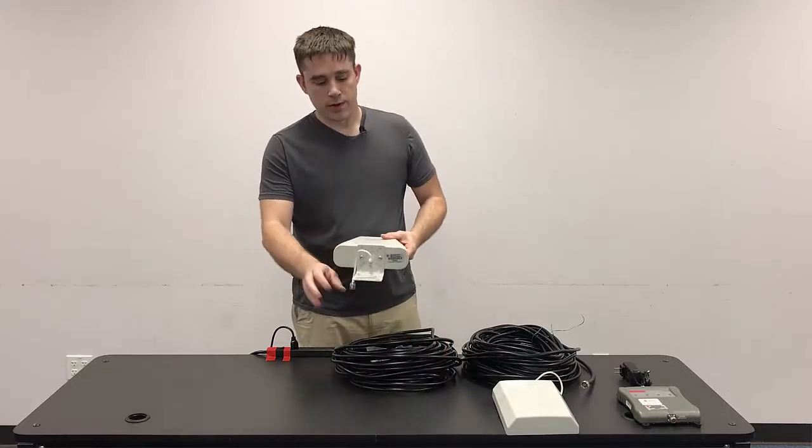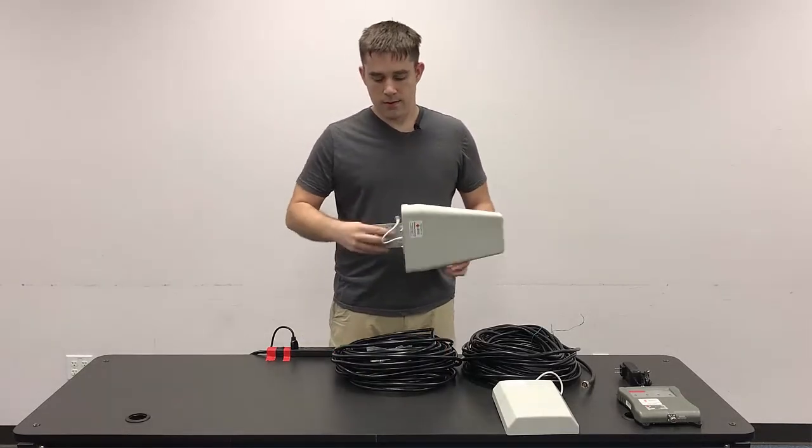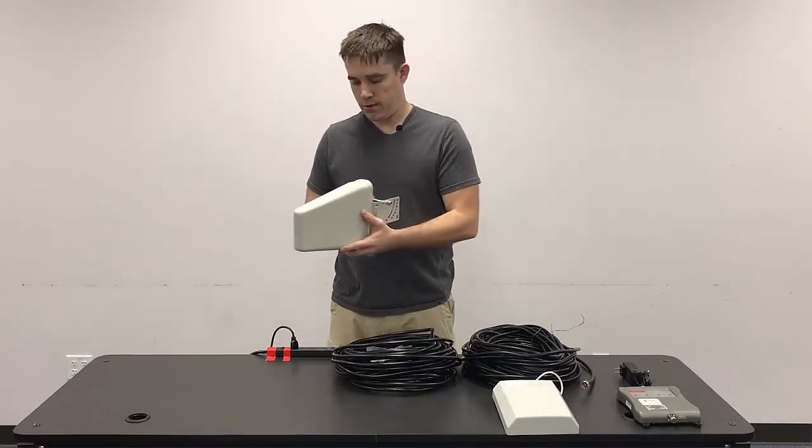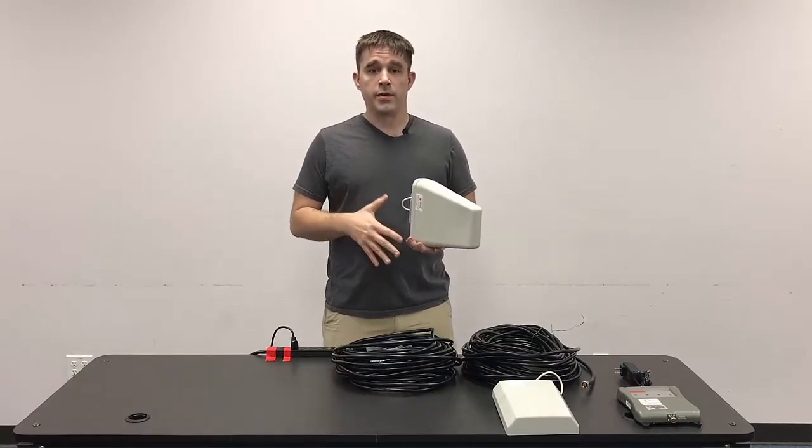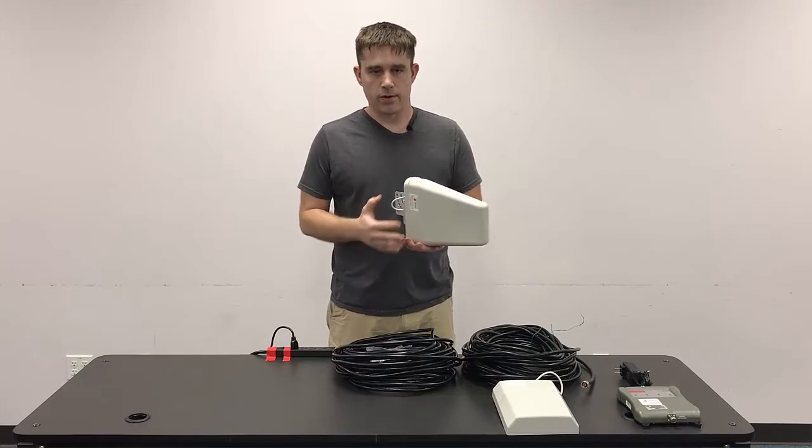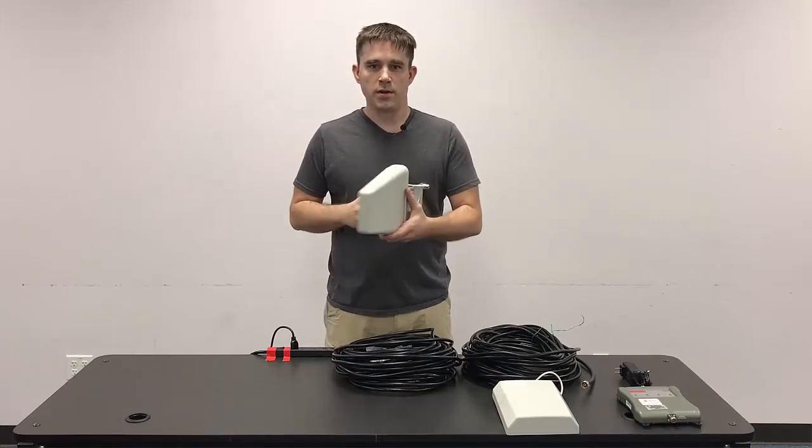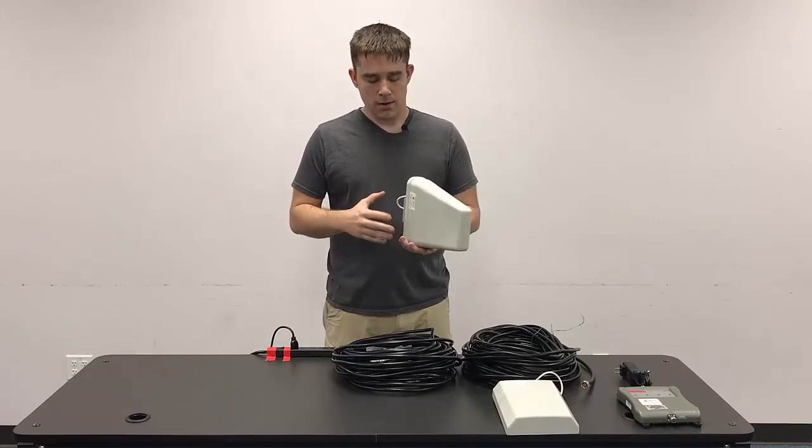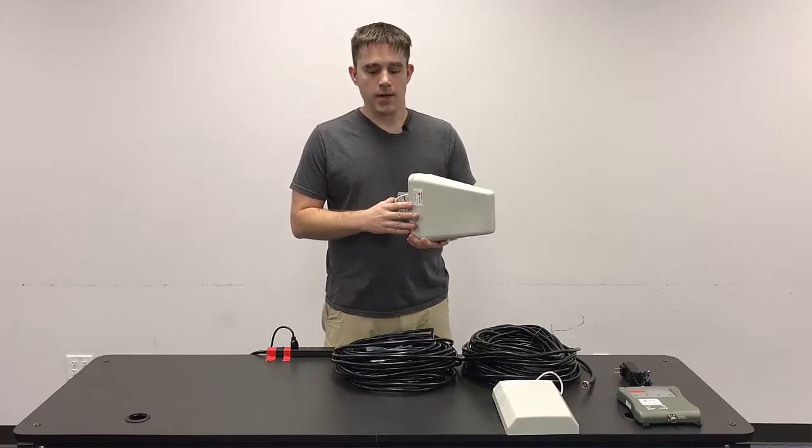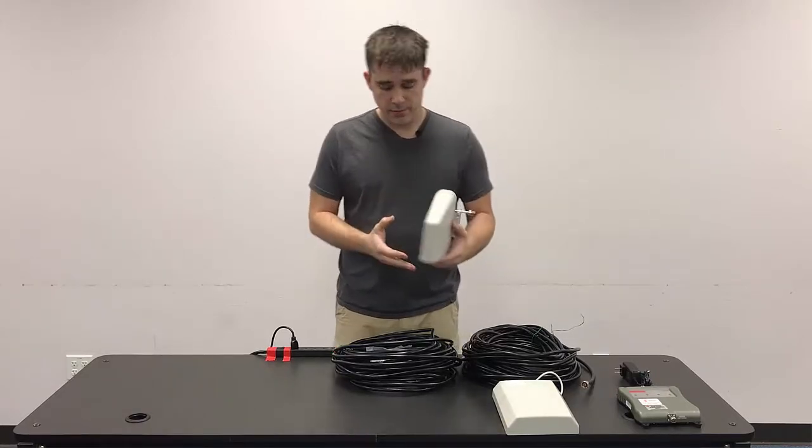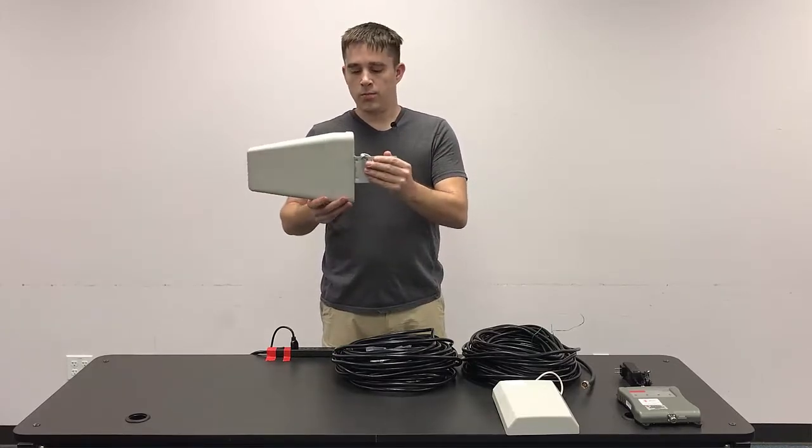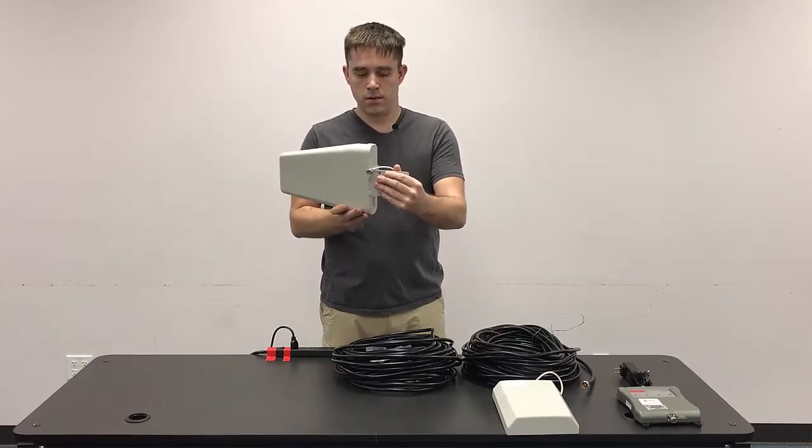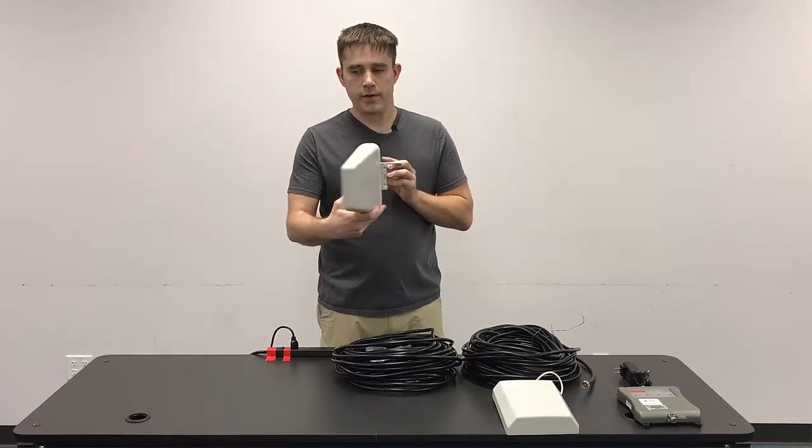The antenna itself will get pointed outside towards a local cellular tower. There is a later procedure in the DTP which talks about pointing it and getting a strong signal strength, and that's all detailed in the DTP. But the antenna itself will get mounted to the side of the building, maybe on a pole, and will get pointed in this type of an orientation here.